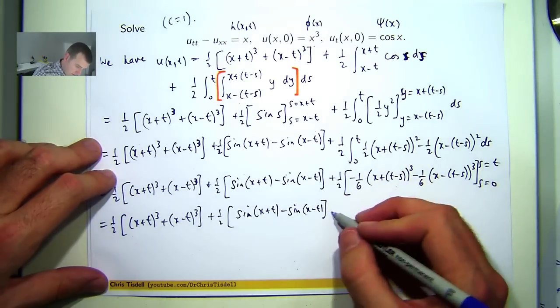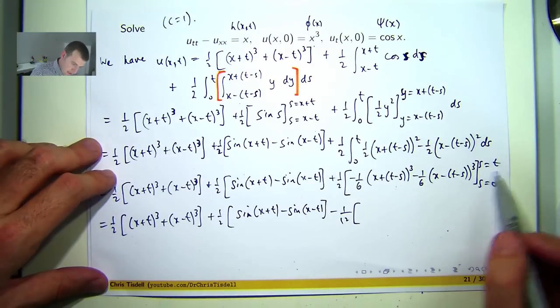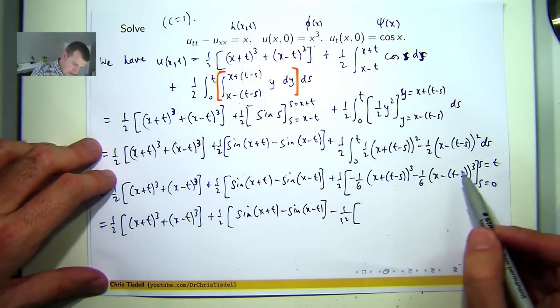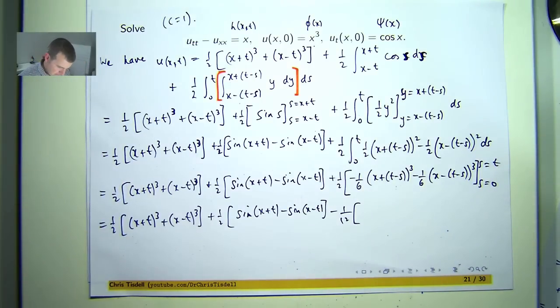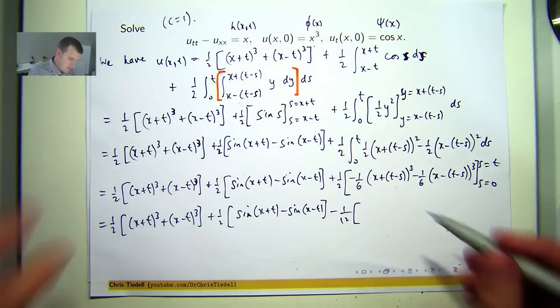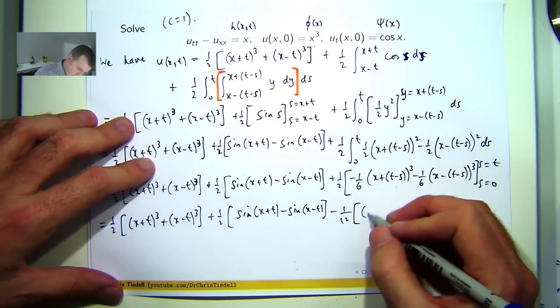Okay, so let's take those out the front. We'll have minus 1 on 12. Alright, so when s equals t, that's going to disappear, and that's going to disappear. So I'll get x cubed, x cubed plus x cubed. So I'll get the following.